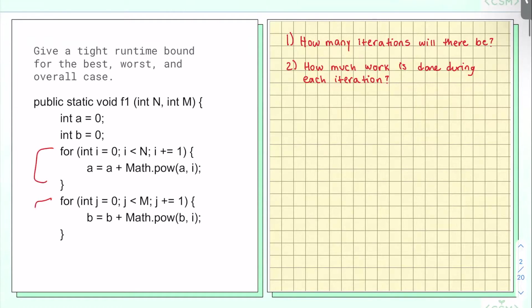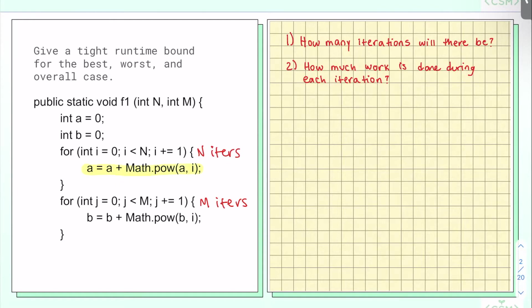I have two for loops. For the first one, I see that I start at zero and I increment by one until I get to n. So I'm going to be doing n iterations. And similarly, down here, I'm going to be doing m iterations. Now, how much work is done during each iteration? Well, I need to look inside the for loop and find that I'm simply doing a calculation — just adding something to a. So this is going to be constant runtime.